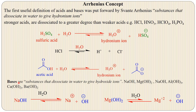Arrhenius said that bases are substances that dissociate in water to give hydroxide ions. For example, sodium hydroxide, magnesium hydroxide, aluminum hydroxide, and calcium hydroxide. In water, these ionize and produce OH⁻.